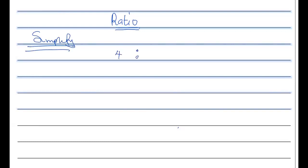The first thing we do is simplifying ratios. So if you have 4 ratio 10 and you are asked to simplify it, four and ten are both in the two times table. So if you divide four by two you will get two, and if you divide ten by two you will get five.